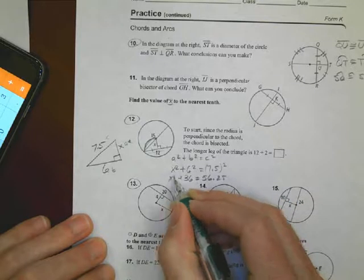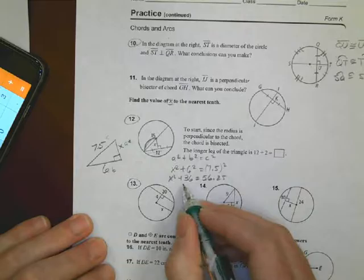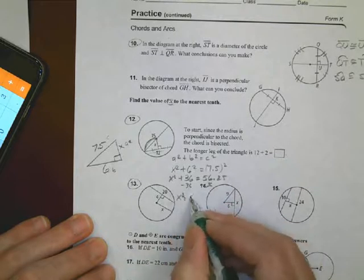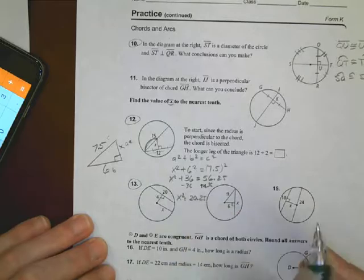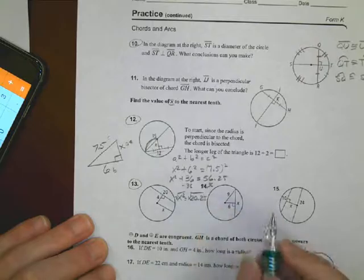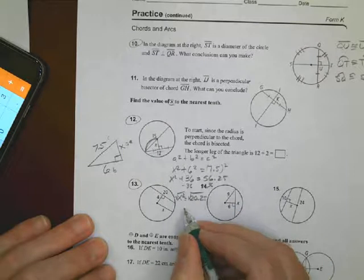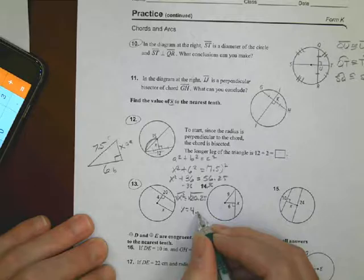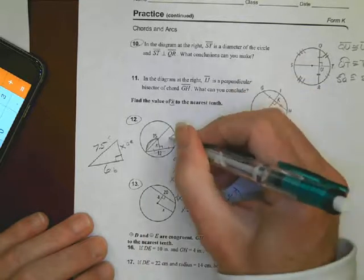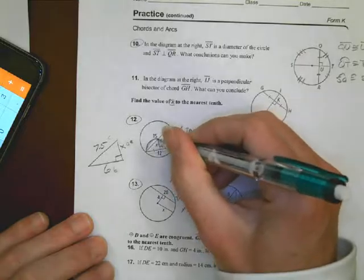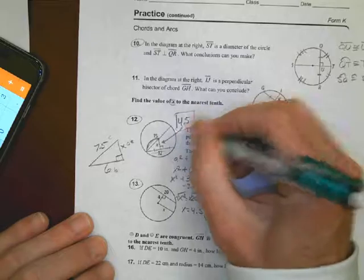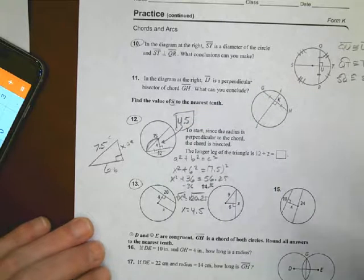56.25. And I have an X squared here. So now I will subtract 36 from both sides, and I have X squared equals 20.25. To get the X by itself, I take the square root of both sides, and the square root of 20.25 is X equals 4.5. So I did all that work to just basically say that the line right there, from the midpoint of the circle to this point of the chord, it's 4.5. Okay. And that's all you're being asked to do on that problem.